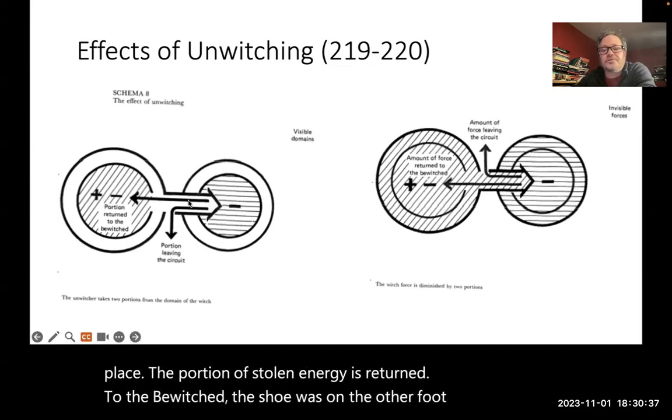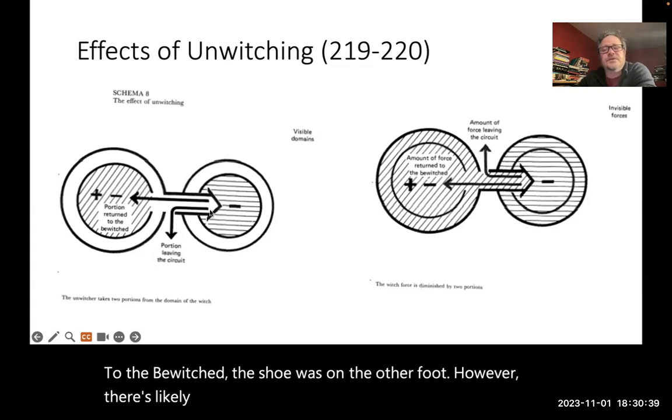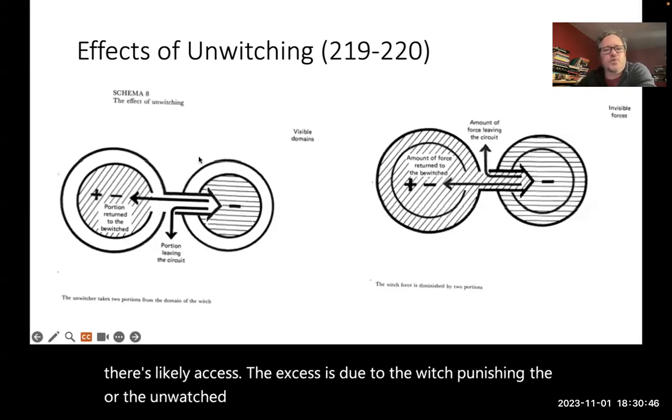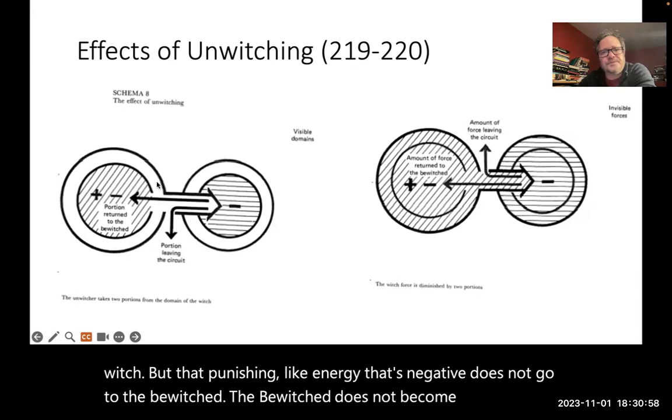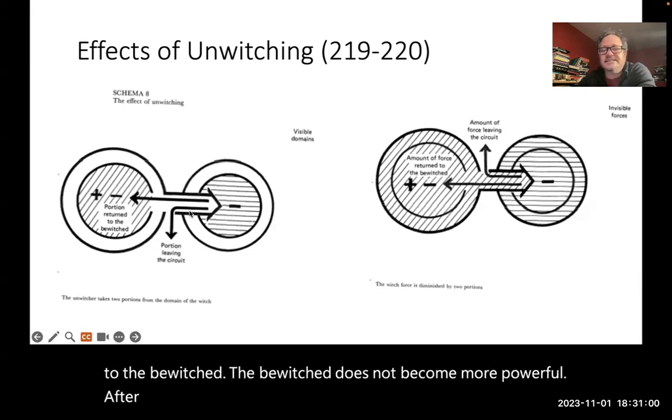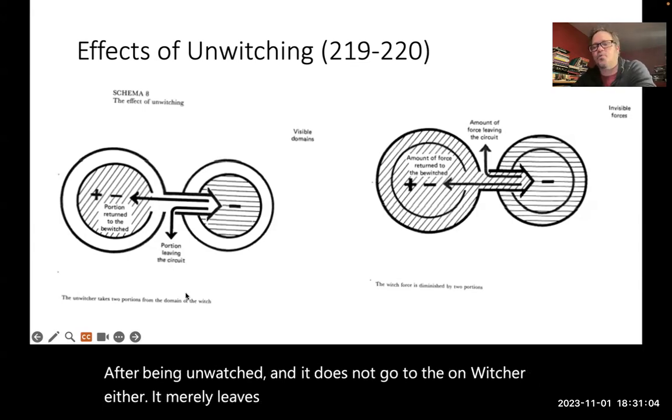However, there's likely excess. The excess is due to the unwitcher punishing the witch. So the unwitcher punishes the witch, but that punishing energy that's negative does not go to the bewitched. The bewitched does not become more powerful after being unwitched. And it does not go to the unwitcher either. It merely leaves the system. Where it goes, nobody knows.